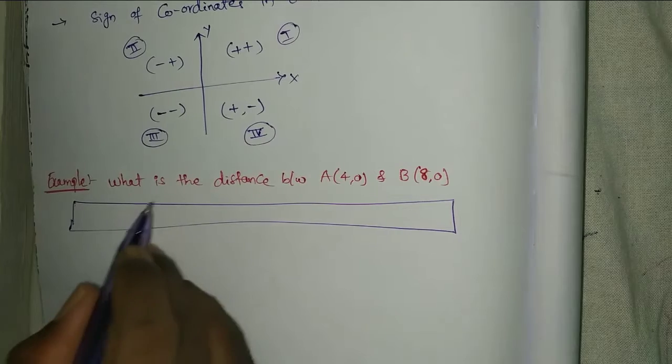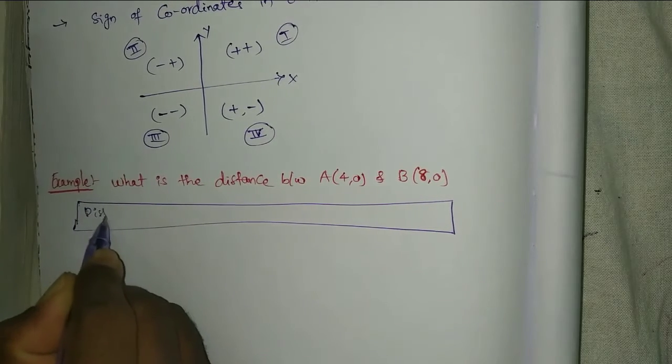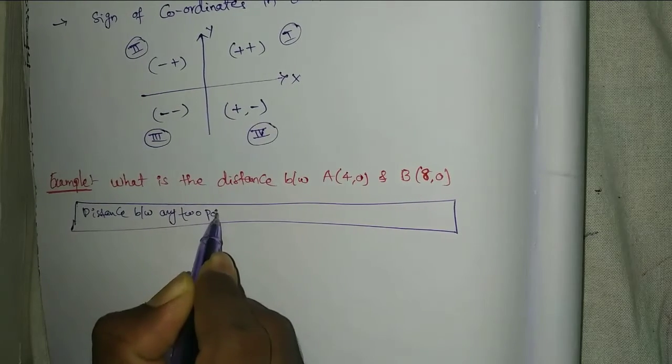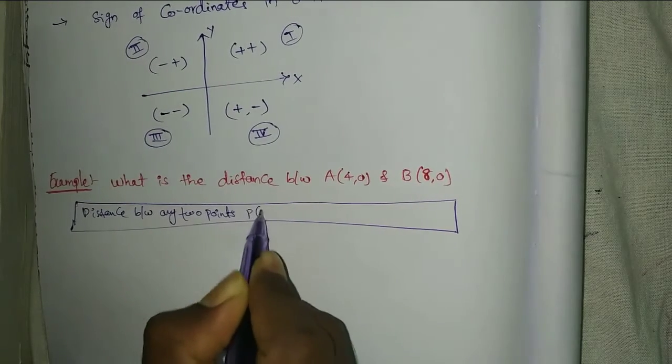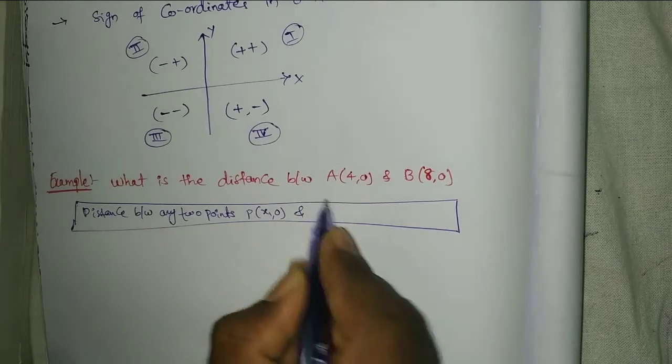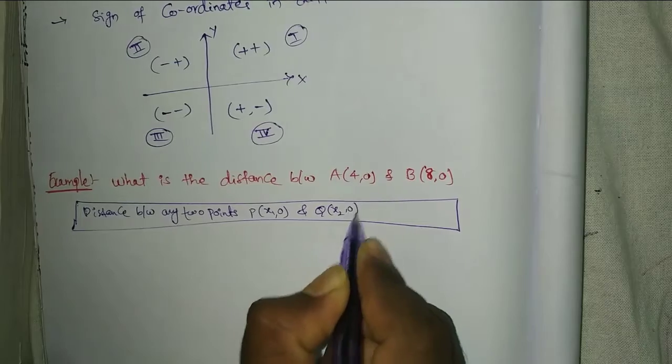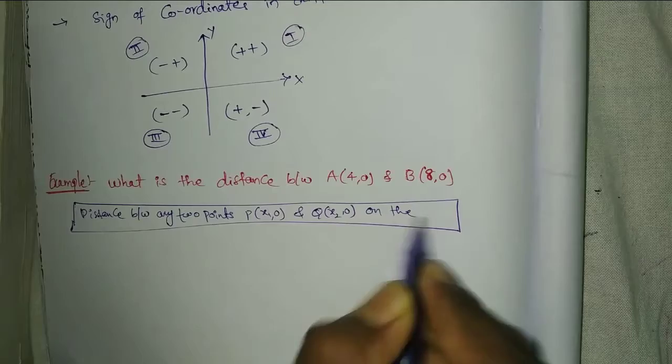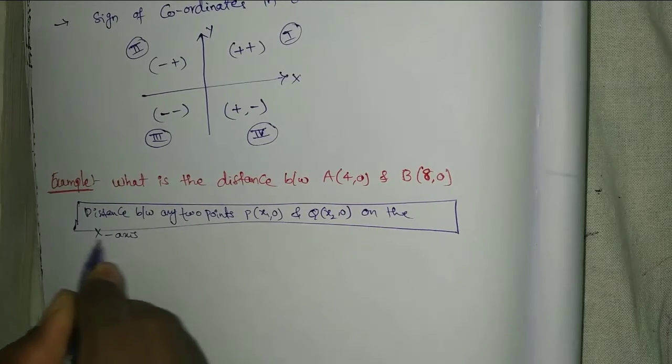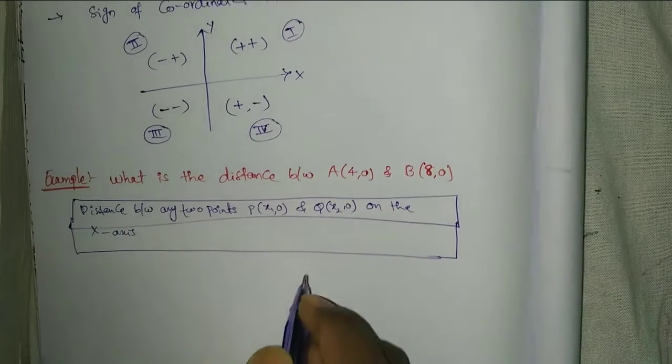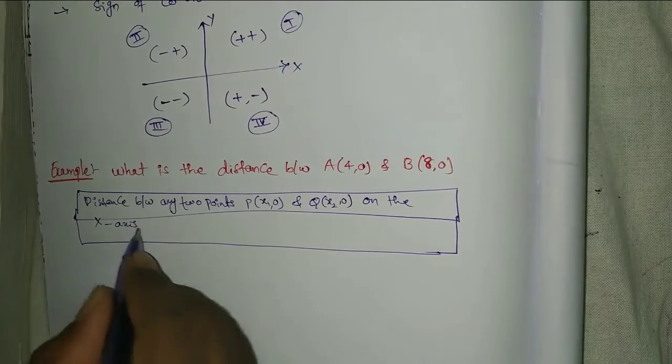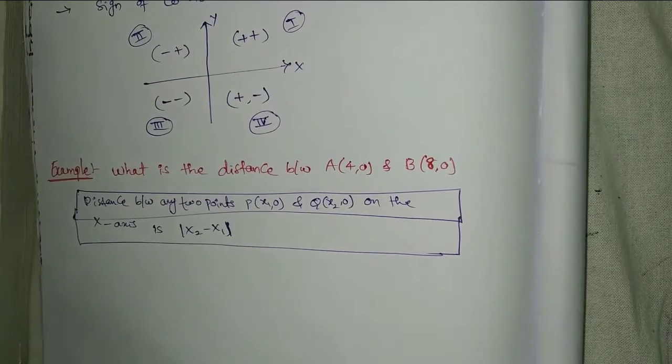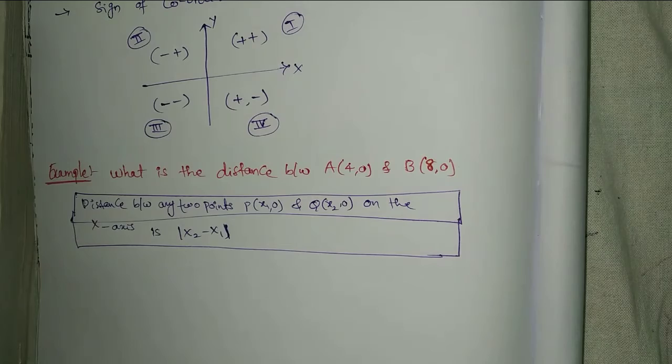Distance between any two points, P of x1 comma 0 and Q of x2 comma 0, on the x-axis is mod x2 minus x1.